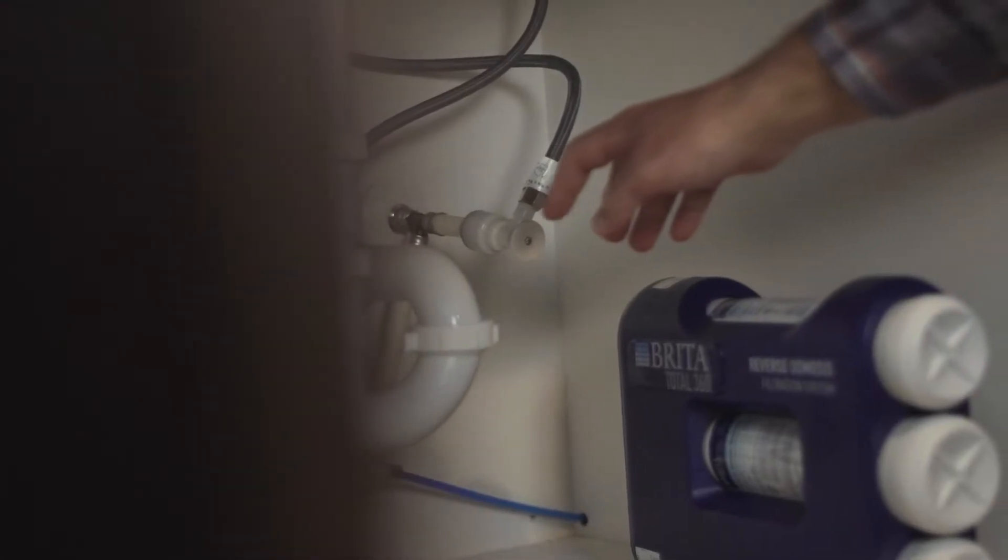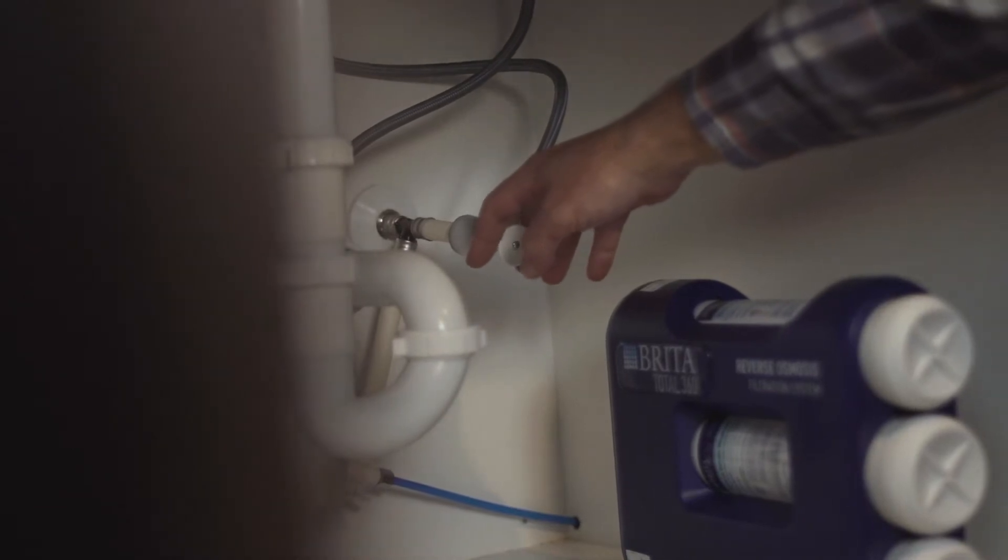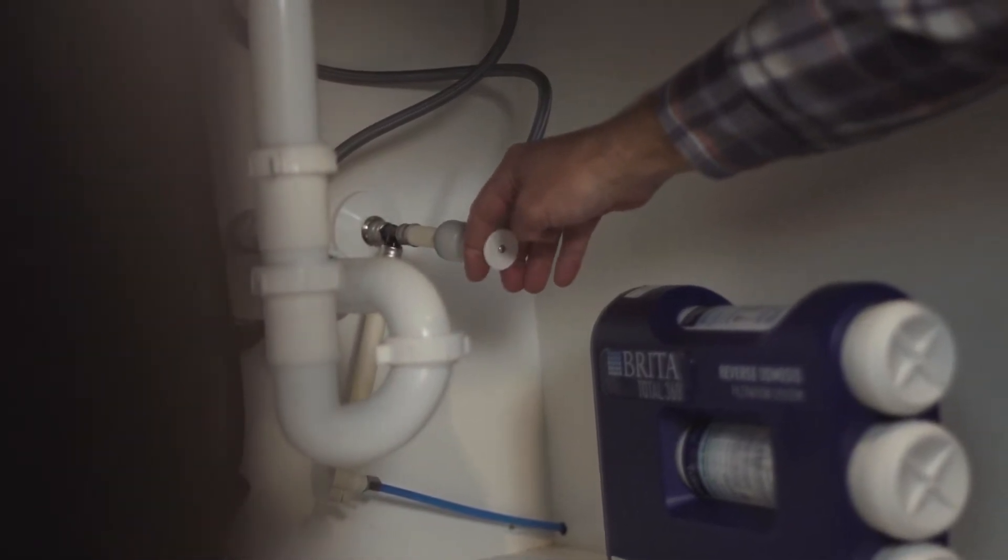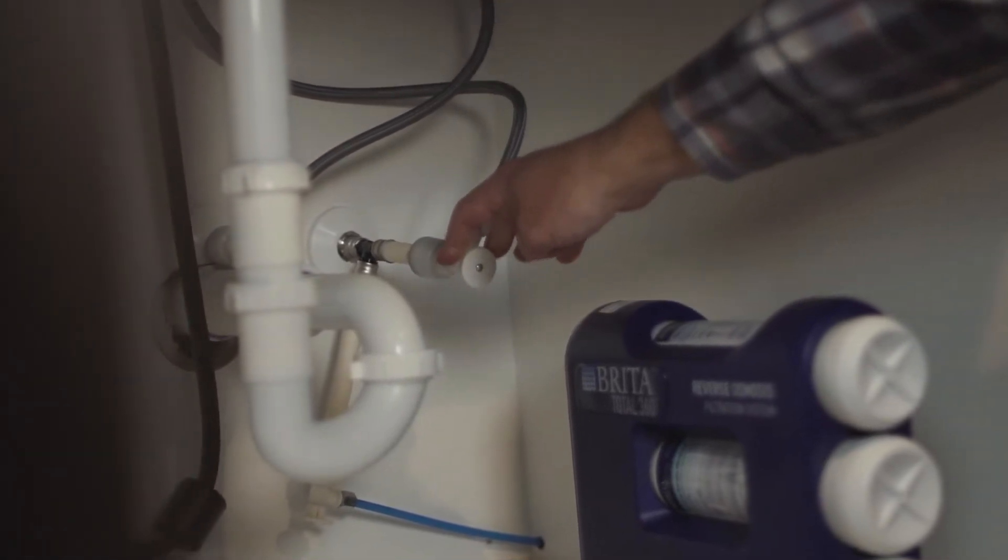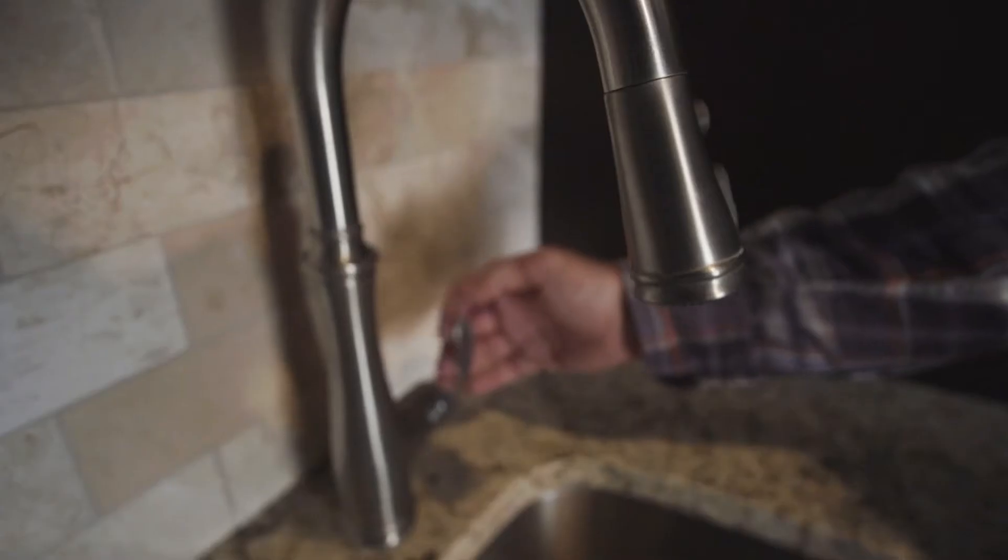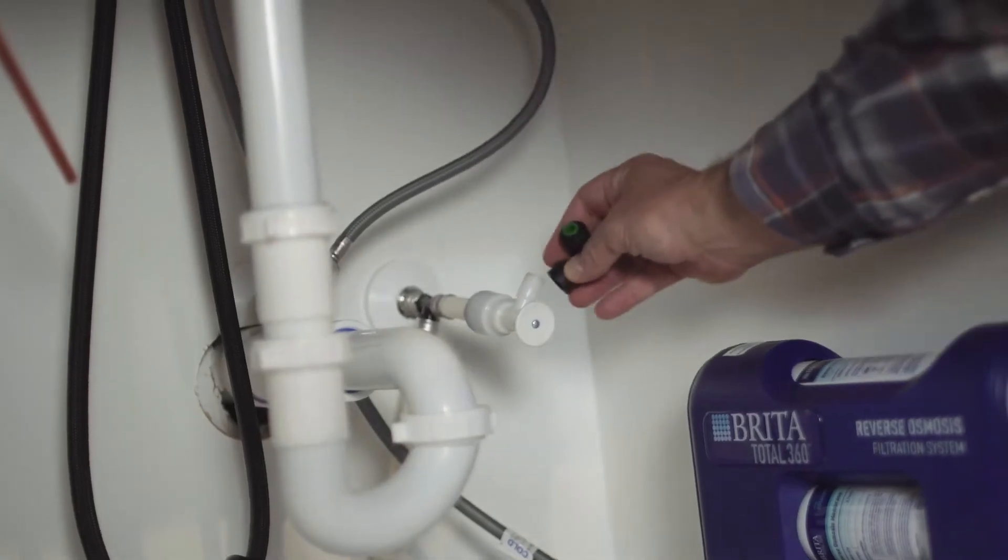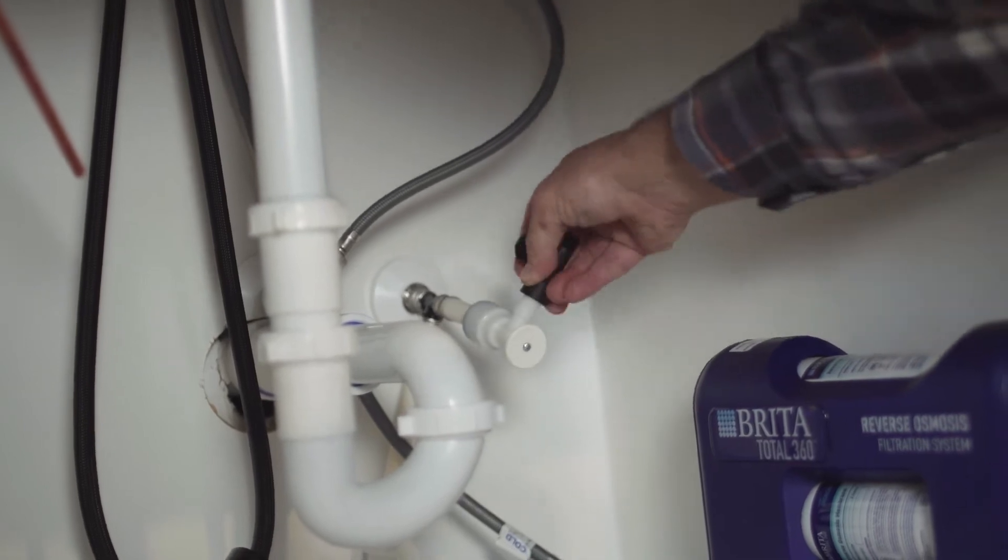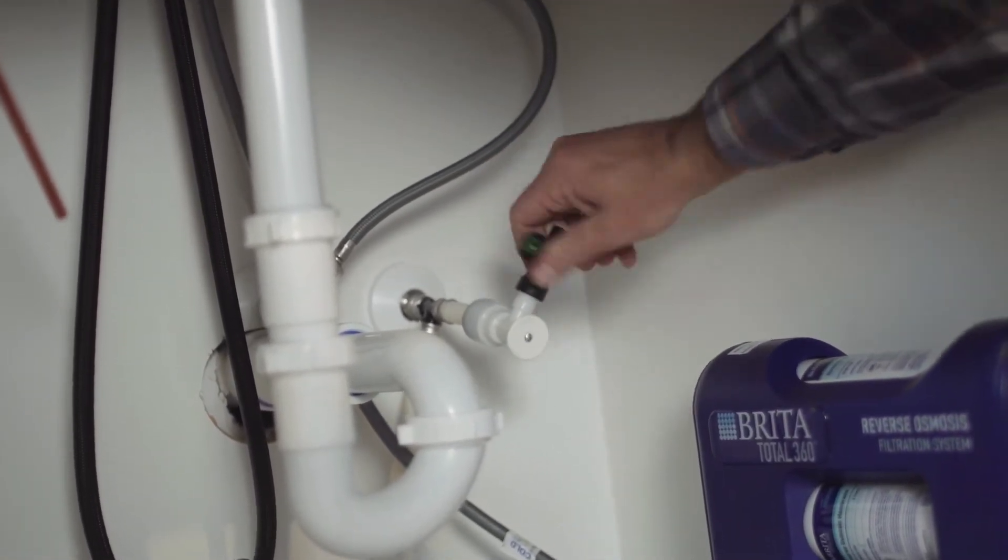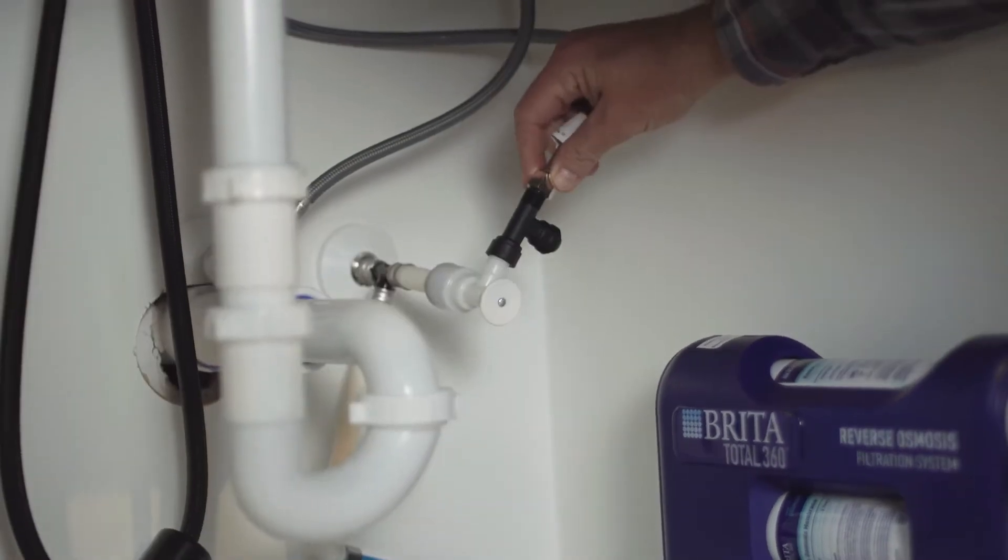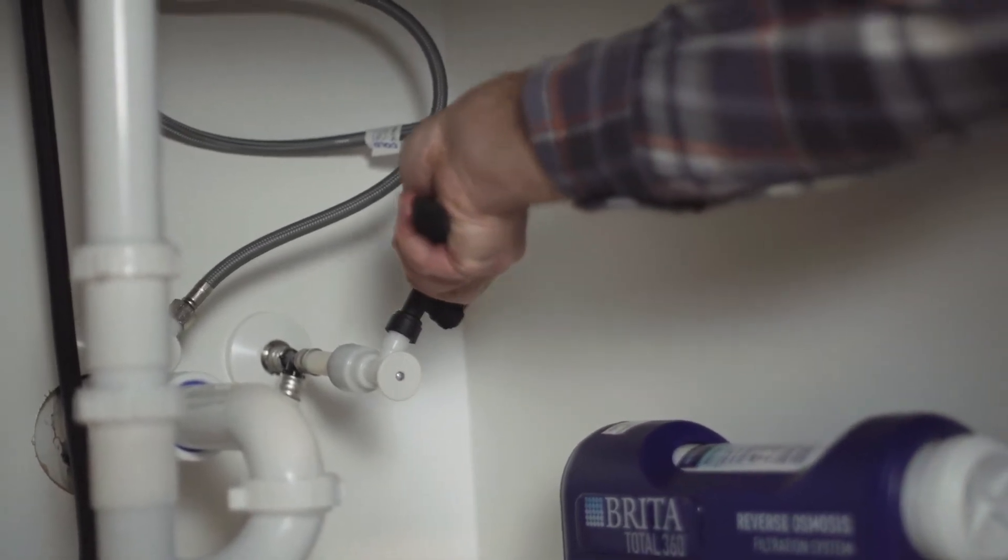The cold water supply fitting sends the water to the RO filter assembly and is much easier to install than it seems. First, close the cold water shutoff valve. Make sure no water continues to flow by turning on the sink faucet until it runs completely dry. Next, unscrew the existing supply line from the shutoff valve. Attach one end of the supply fitting to the shutoff valve and then attach the cold water supply line to the other end. Gently tighten all of the connections, but don't over tighten them.